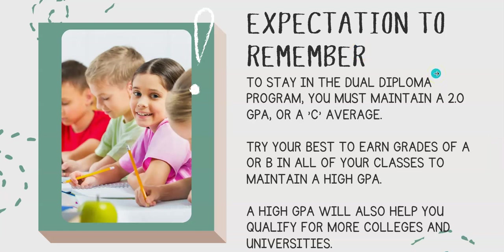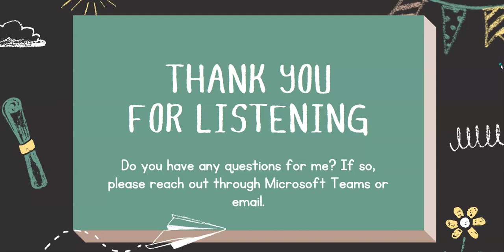An important expectation to remember is that to stay in the dual diploma program, you must maintain a 2.0 GPA, which is a C average. The best thing you can do is try to earn grades of a B or an A in all of your classes to maintain a high GPA. A high GPA will also help you qualify for more colleges and universities if you plan to attend college in the United States. Thank you for listening. If you have any remaining questions about GPA, please feel free to reach out through Microsoft Teams or email. Thank you and have a great day.